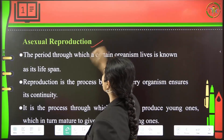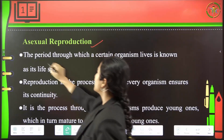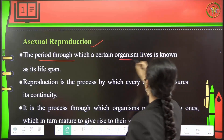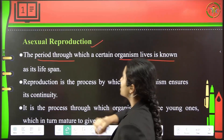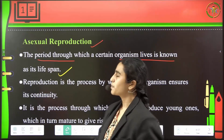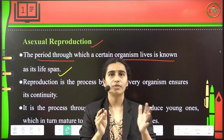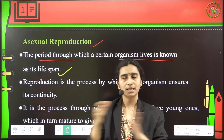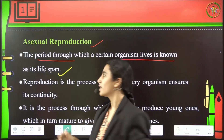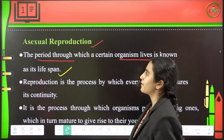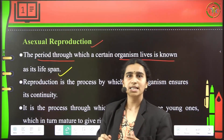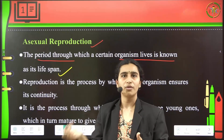Firstly, asexual reproduction. The asexual reproduction will be considered as a period by which certain organisms will extend their life. Basically, life span is the period from birth till death — the entire life lived by the organism. Coming to reproduction, it is the continuation of their offspring.